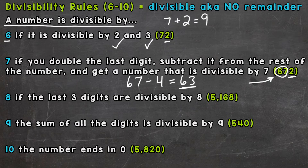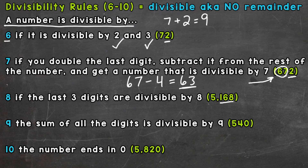For 8: a number is divisible by 8 if the last three digits are divisible by 8. So let's take a look at the last three digits here — we have 168. If those last three digits are divisible by 8, then the whole number is divisible by 8. And 168 divided by 8 equals 21 without a remainder, so those last three digits are divisible by 8. Therefore, 5,168 is divisible by 8.